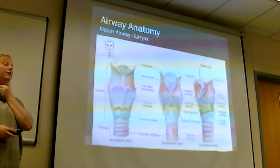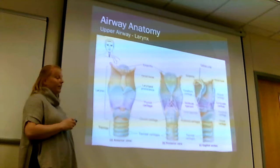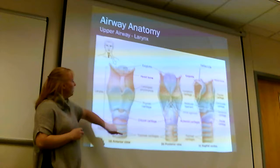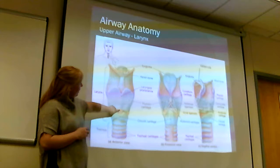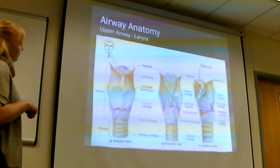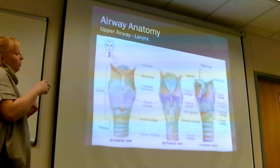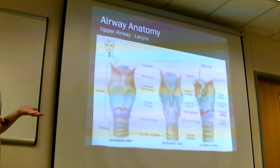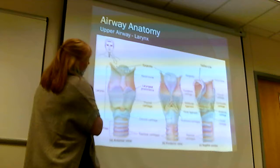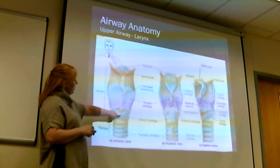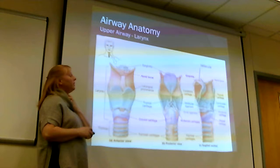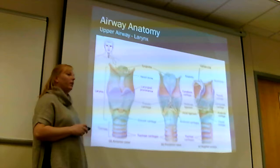The thyroid cartilage — your Adam's apple — is important to identify because right below it is the cricothyroid membrane, between the thyroid cartilage and the cricoid cartilage. That is where you will save someone's life if you can't get the airway — by performing a cricothyrotomy. The epiglottis is the little flap that closes the airway when you swallow, and it's also the point where you place your blade to intubate: the curved blade goes behind the epiglottis, the straight blade lifts it to reveal the vocal cords.